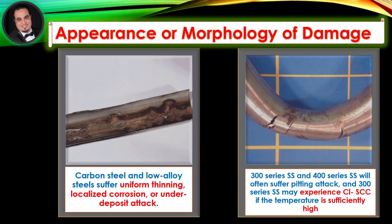Low alloy steels suffer uniform thinning, localized corrosion, or under-deposit attack. 300 series and 400 series stainless steel will often suffer pitting attack. And 300 series stainless steel may experience chloride stress corrosion cracking if the temperature is sufficiently high.